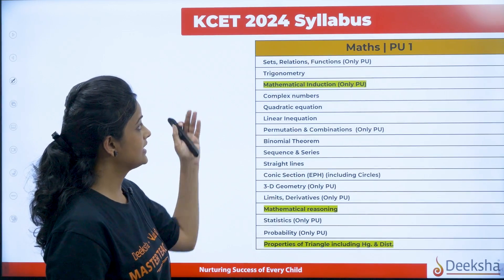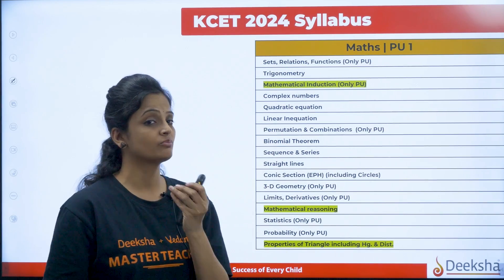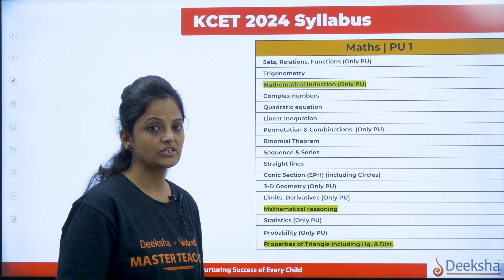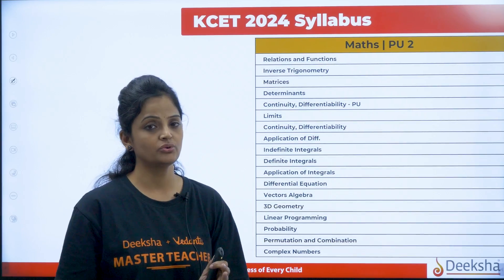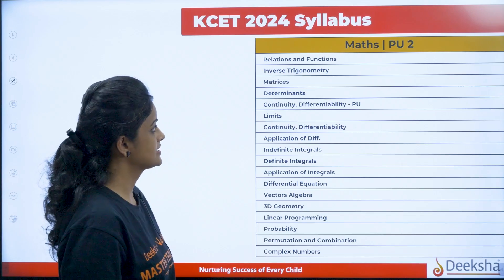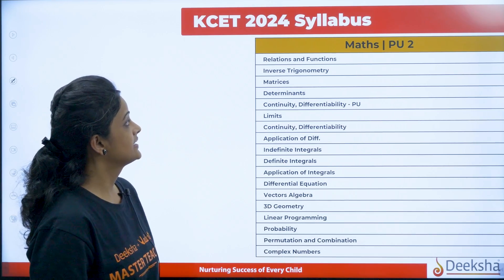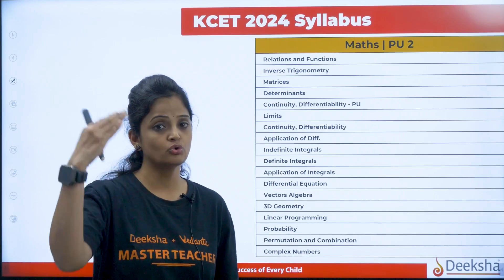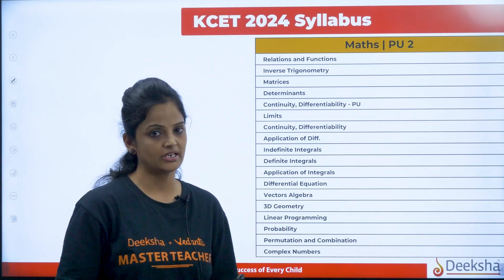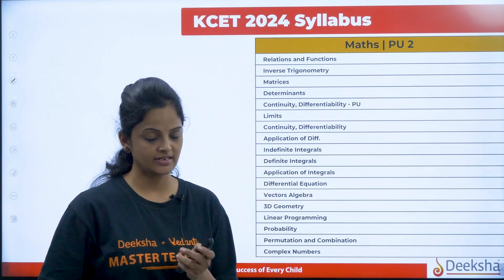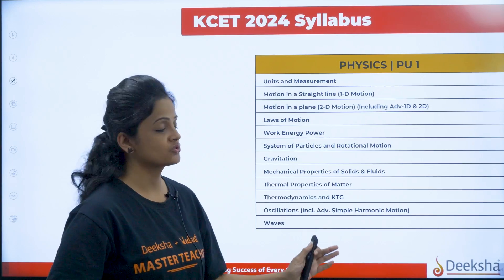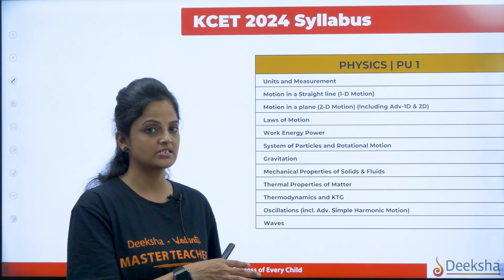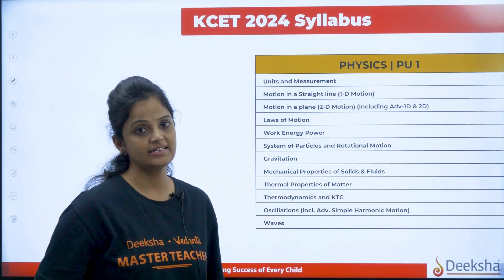For first PUC math syllabus: sets, relations and functions, trigonometry is the most important, complex numbers, quadratic, linear inequations, permutation and combinations — go through all the chapters. Have a good knowledge of which are there and which are not in your syllabus. Second PUC math syllabus includes relations and functions, inverse trigonometry, matrices and determinants, and calculus — a huge part covering differentiation, integration, and application. The rest of the chapters you can see on screen. Take a screenshot so you have a clear idea which chapters are coming this year. There are a lot of changes compared to last year — that's why we have brought this latest syllabus for you.